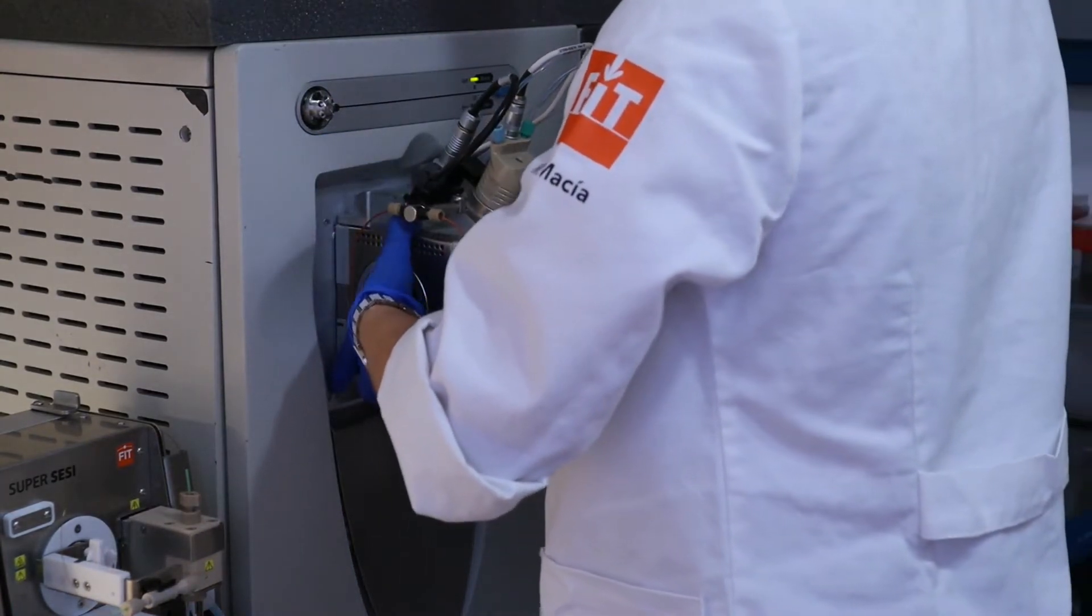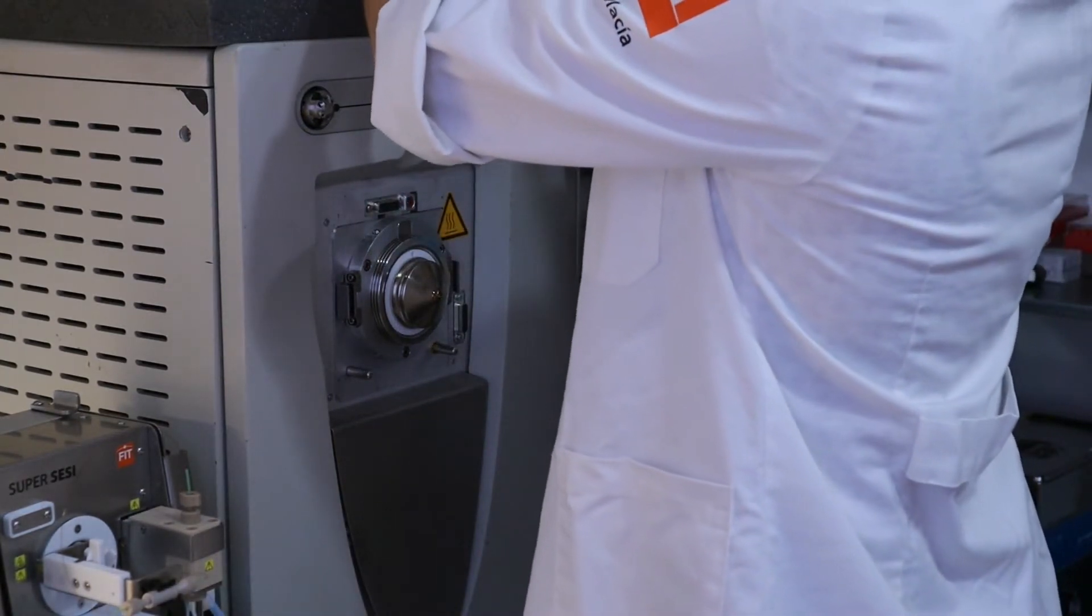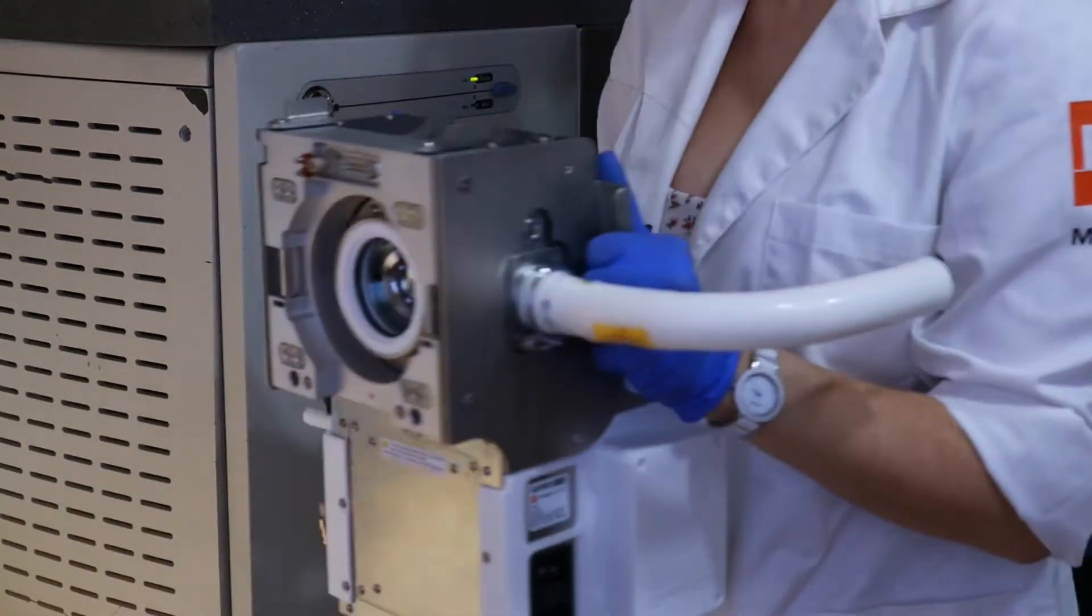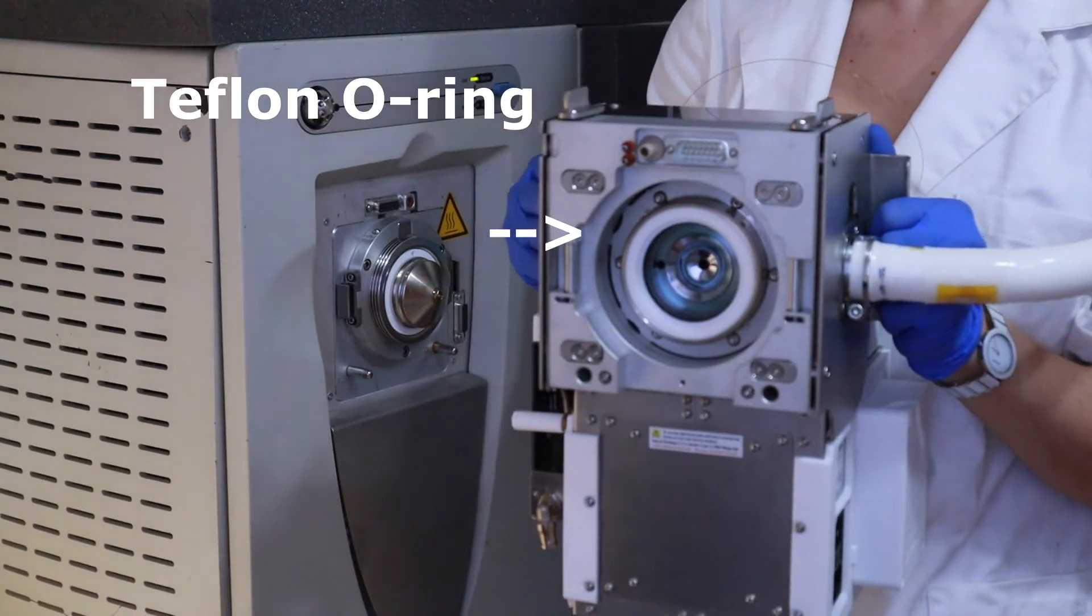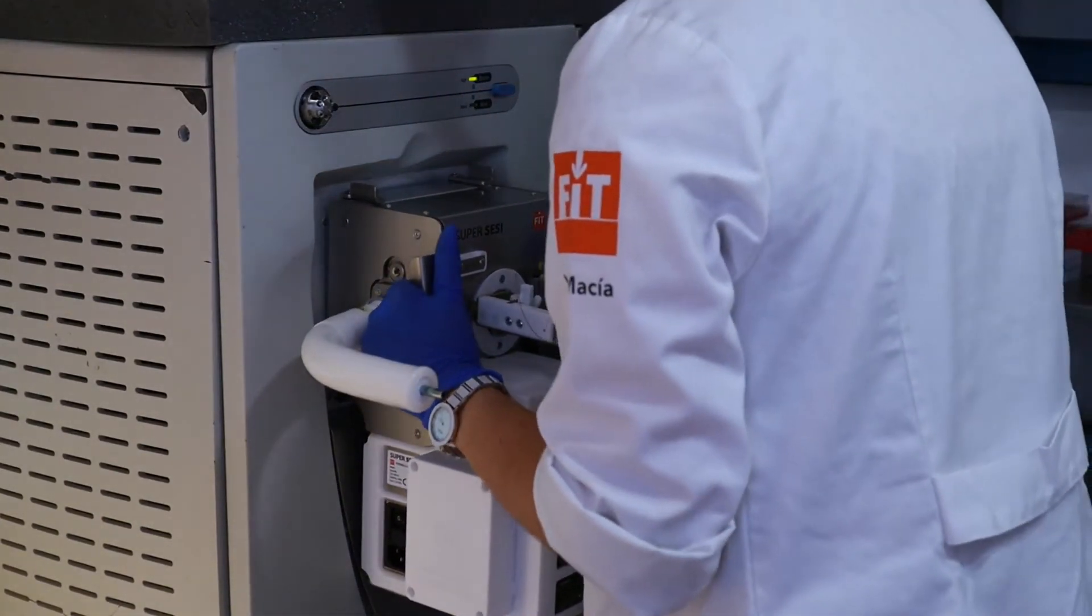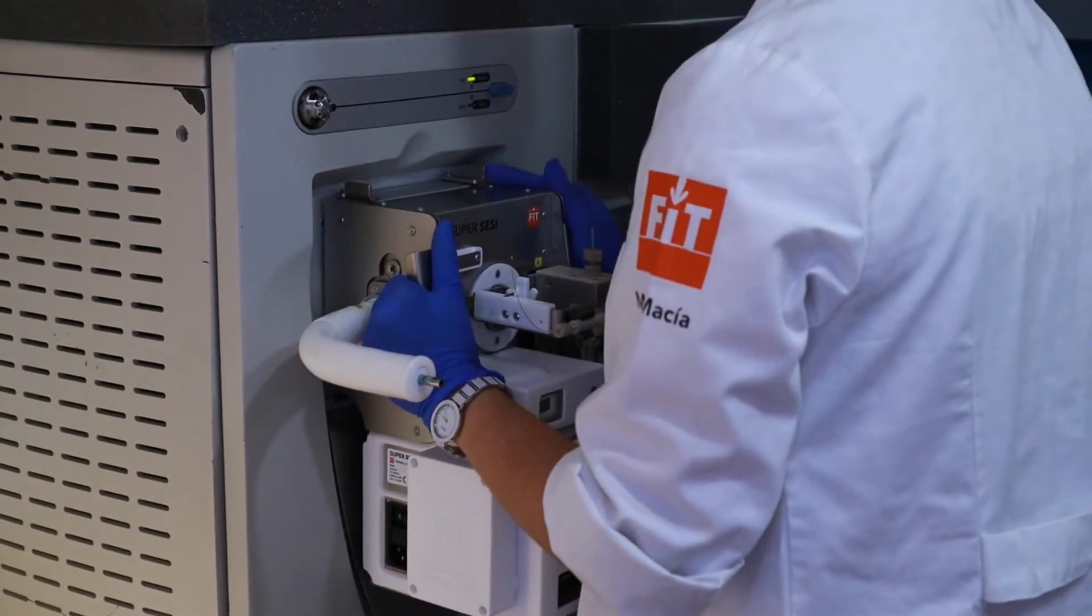Once ready, the first thing to do is connect the SuperSesi to the MS. The SuperSesi has an o-ring to seal the core of the ionizer and the inlet cone of the MS. This o-ring is made of Teflon to ensure it does not release vapors. Teflon is harder than most gaskets, so you will have to push and wiggle until it fits. This is normal and it is okay.